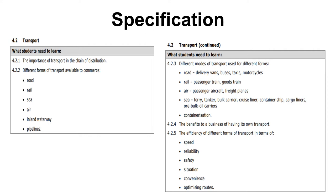For example: the importance of transport in the chain of distribution, different forms of transport available to commerce, different modes of transport used for different forms such as road transportation, railway transportation, air transportation, sea transportation, containerization, and the benefits to a business of having its own transport.